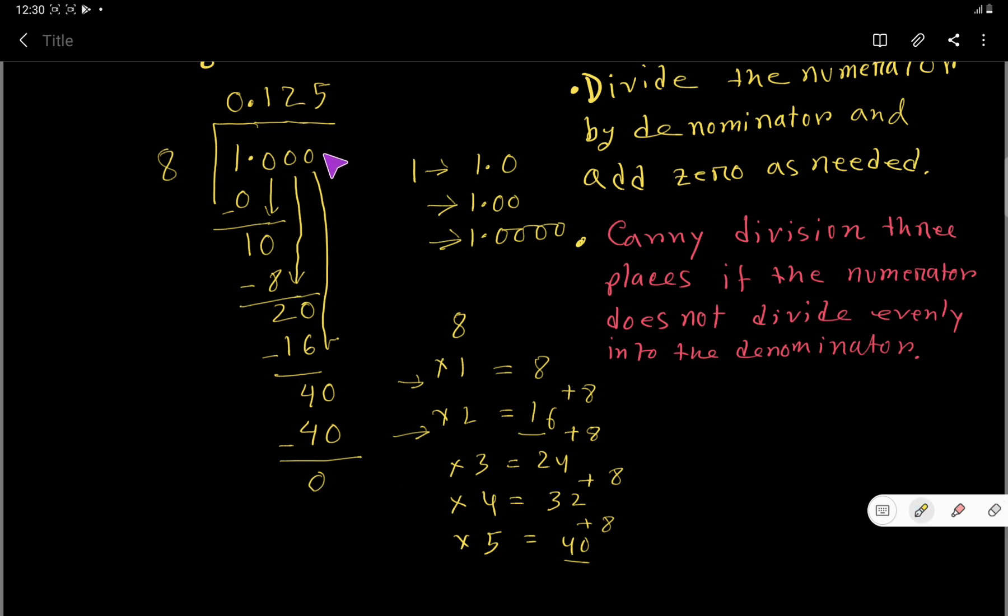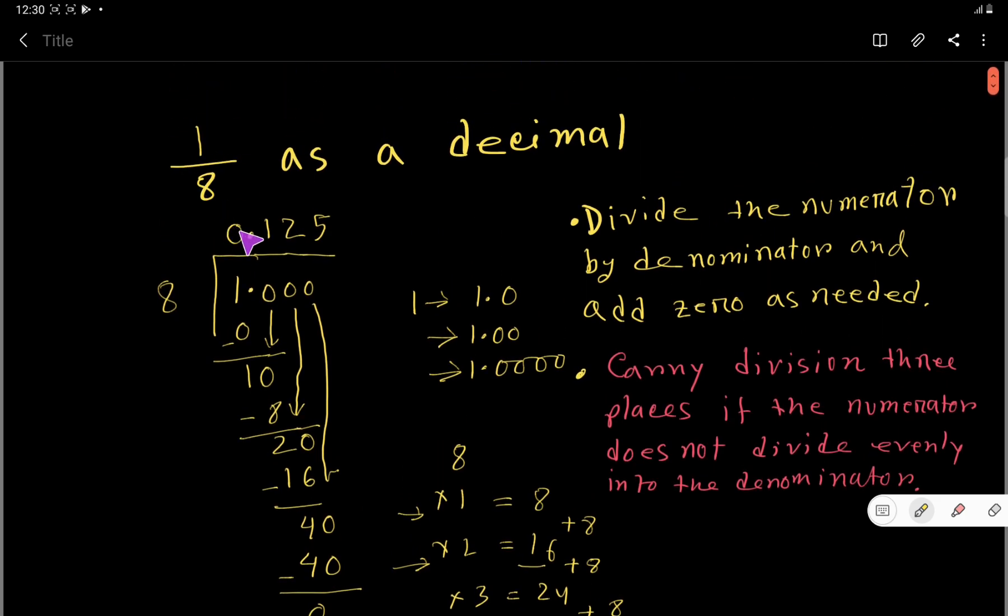That is, 1 over 8 as a decimal is 0.125. I hope, believe, and expect that you have understood the process of converting a fraction to decimal.